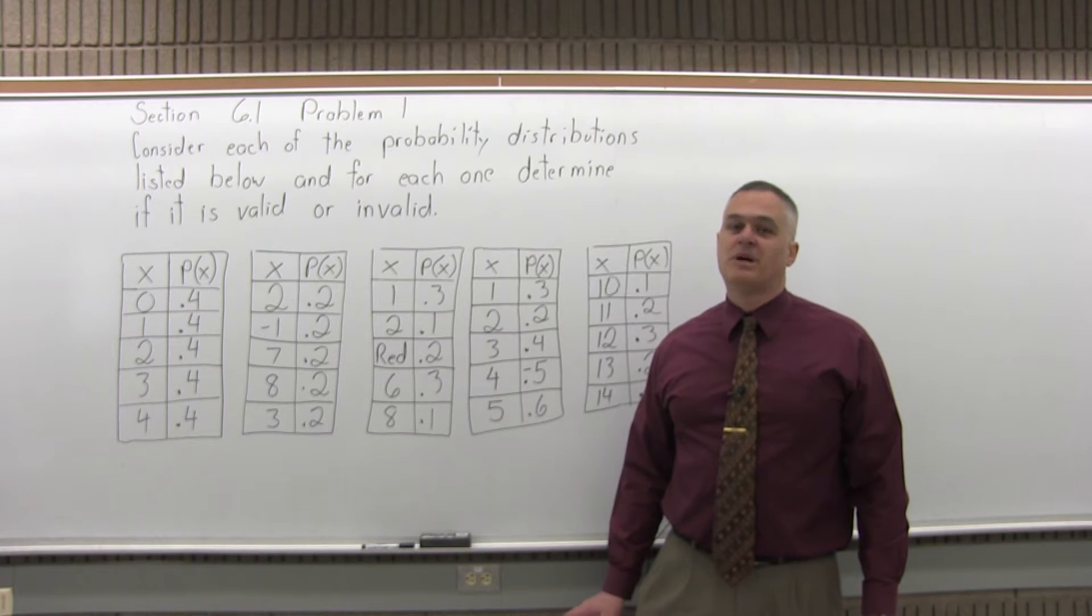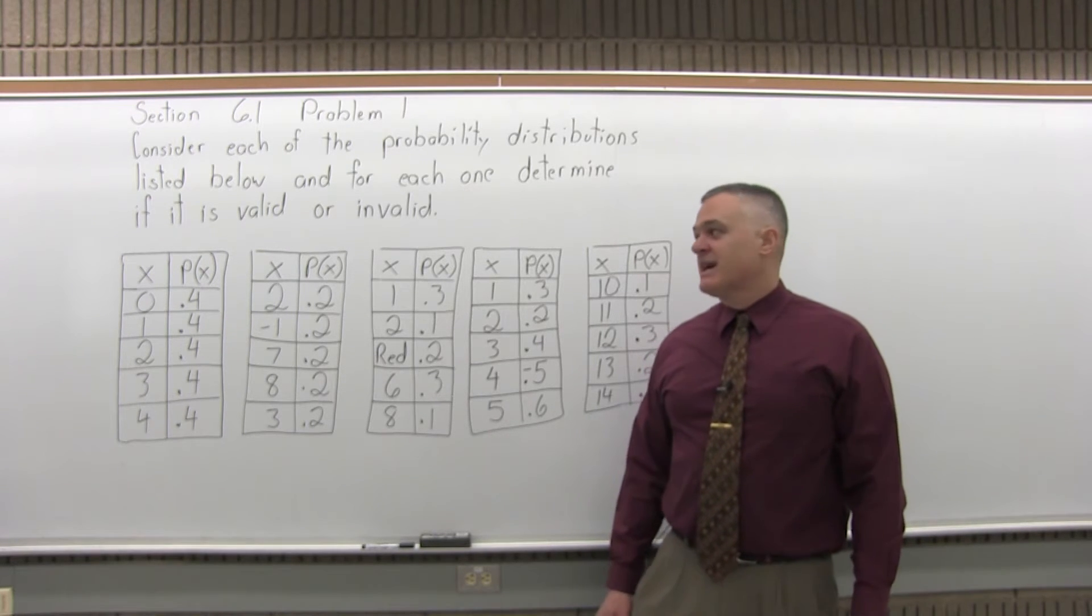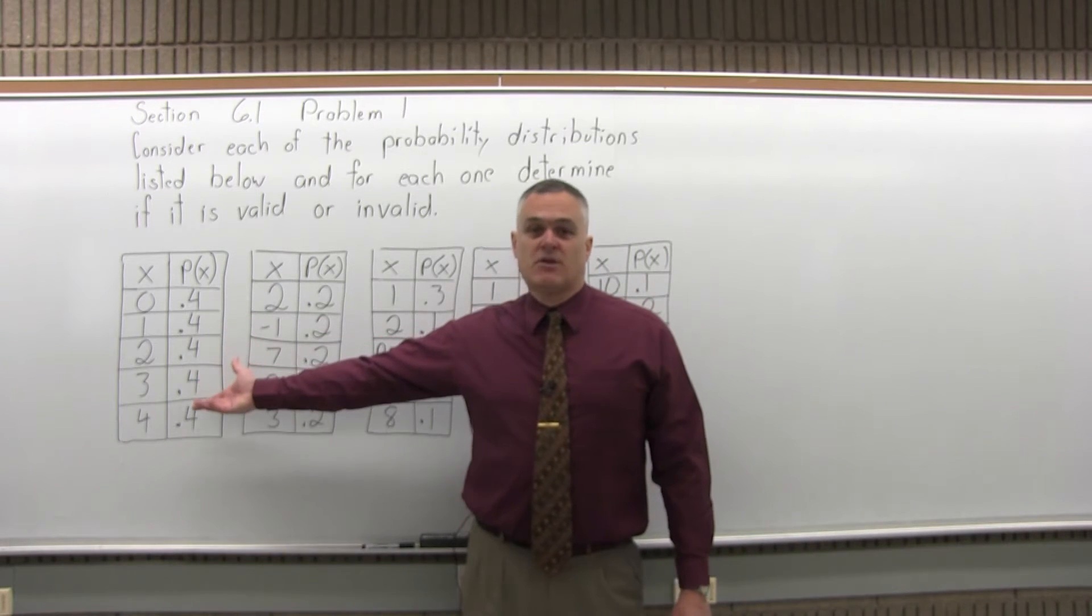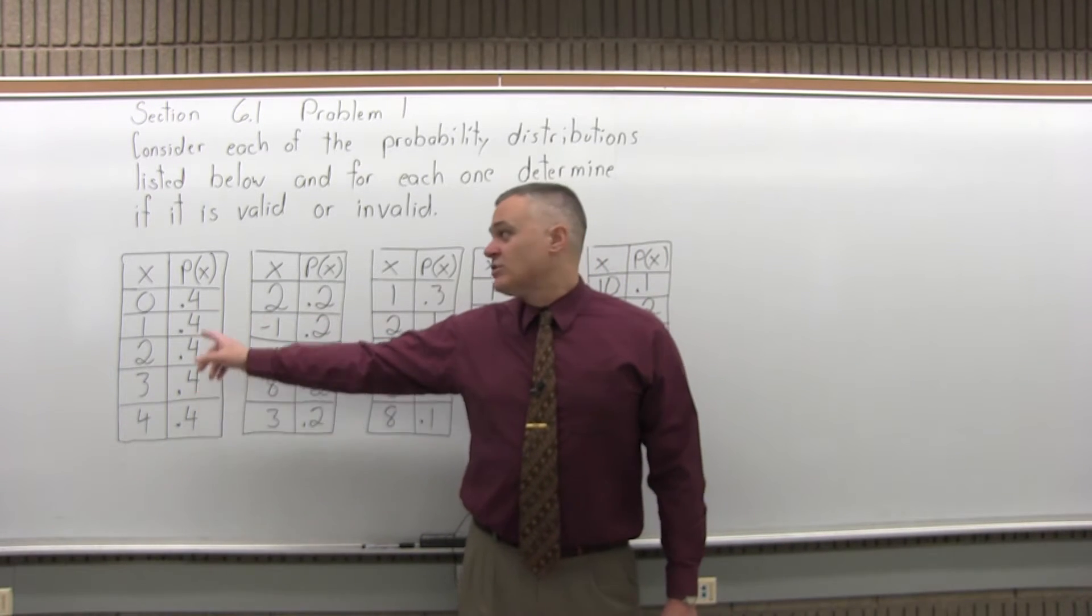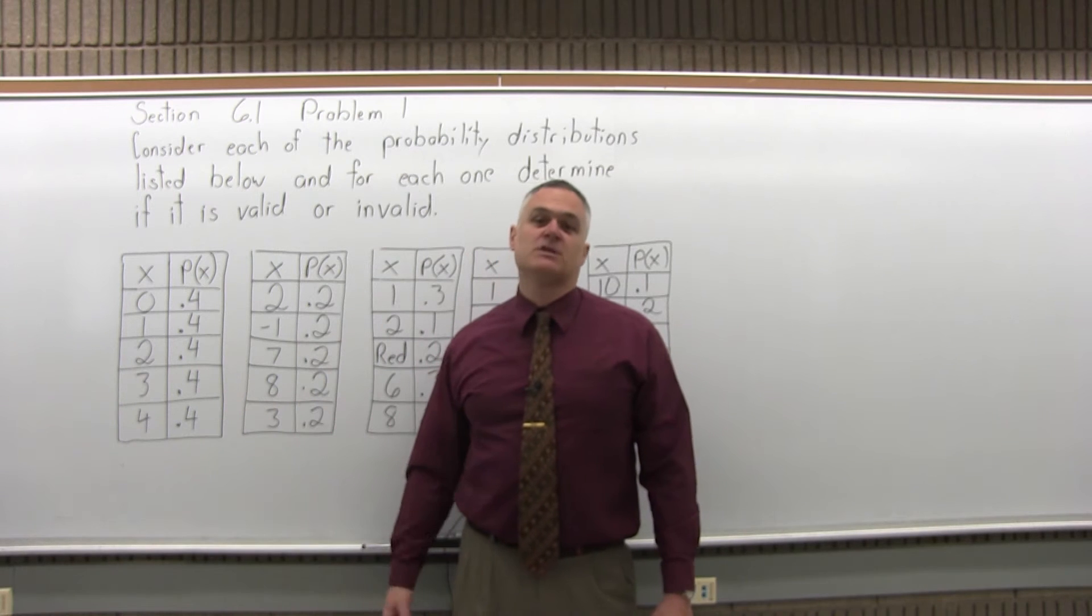First of all, everything in the first column must be a number. Second, everything in the second column must be between 0 and 1. And third, the total of the second column must be a total of 1.